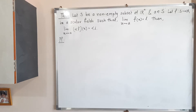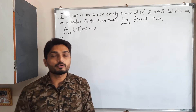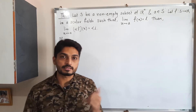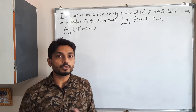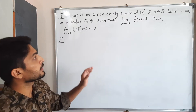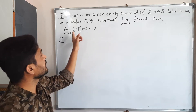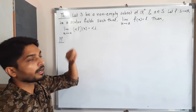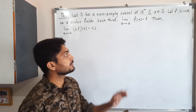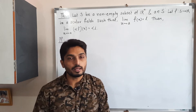Let us discuss this result, which is part of the algebra of limits. Two results were discussed in the last video; in this video we cover the scalar multiple result. If the limit of f(x) is l, and you multiply alpha to f, then the limit of alpha·f is alpha·l as x approaches a.